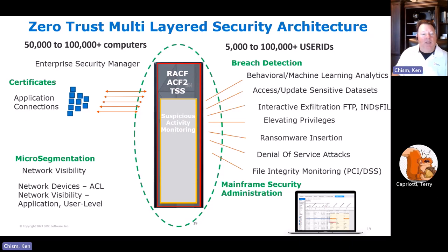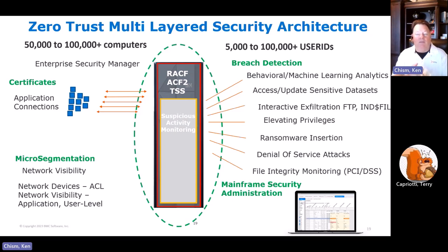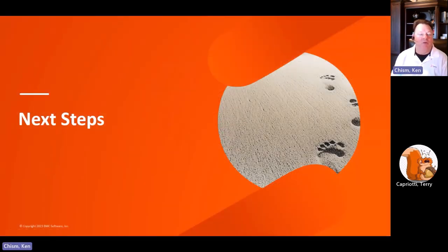So that covers the key areas for zero trust from a mainframe perspective: make sure that computers connecting are verified with certificates implemented in an automated fashion; make sure that network users only have access to the mainframe if they've been authorized; consistently watch for breach detection activity and notify the mainframe teams and the security operations center when that activity occurs; and finally, provide an easier mechanism to administer mainframe security to keep those resources and privileges as tight as possible. I'll turn it back over to you, Terry.